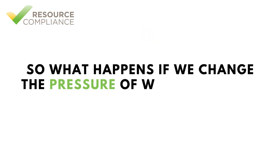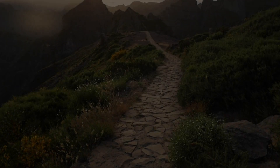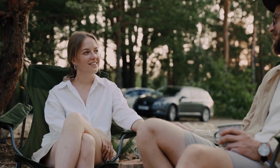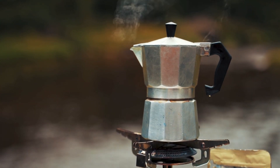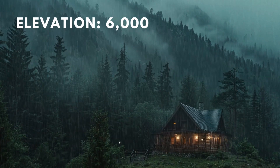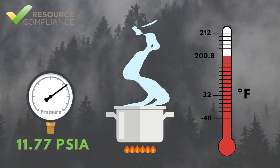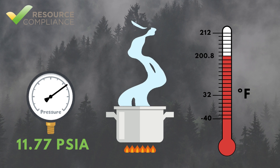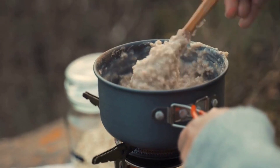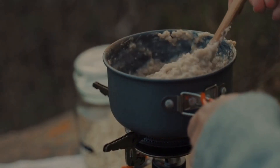So what happens if we change the pressure of water and then apply heat? Experiments have shown that changing the pressure will have a direct effect on the boiling point. If you've ever been tasked with cooking a meal at a high elevation, you may already know instinctively that water boils differently – this can be attributed to the change in atmospheric pressure. At an elevation of 6,000 feet above sea level, the atmospheric pressure is 11.77 PSIA, which reduces the boiling point to 200.8 degrees Fahrenheit. This means the water will begin boiling sooner, but if you are trying to cook something, it will take longer since the temperature is lower.